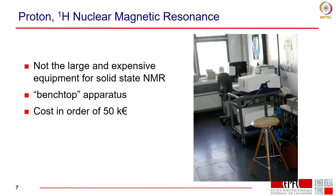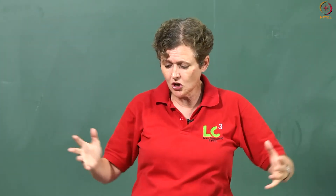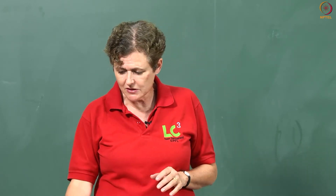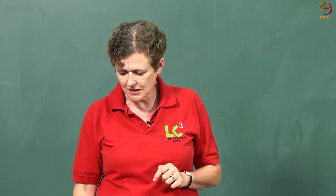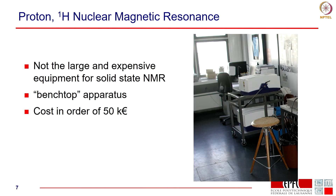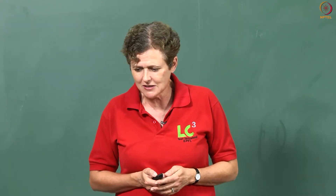The equipment you need for proton NMR is not the very large magnets you may have seen for solid-state NMR like silicon NMR or aluminium NMR. It is really this little benchtop apparatus. As you can see in our lab, it is not very big, and also not too expensive — on the order of 50,000 euros, which is much less than an SEM or x-ray diffraction.